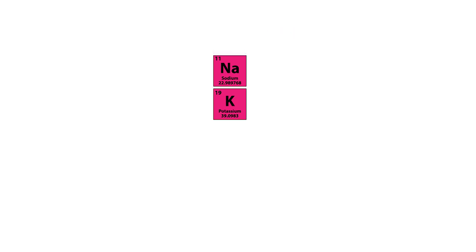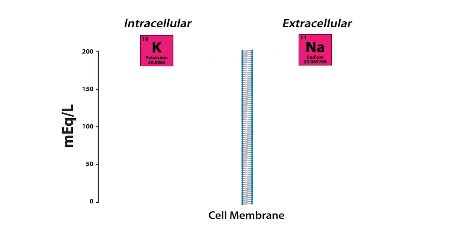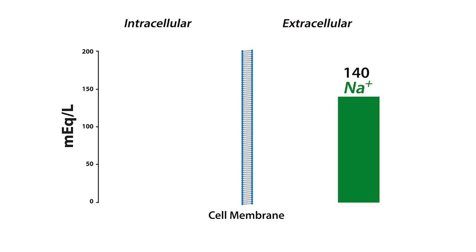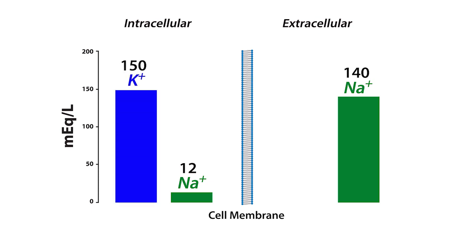On the other hand, sodium and potassium are the two most abundant extracellular and intracellular ions, respectively. For example, the typical extracellular sodium concentration is 140 mEq per liter, while the intracellular sodium concentration is about 12 mEq per liter. On the other hand, intracellular potassium concentration is about 150 mEq per liter, while the extracellular potassium concentration ranges between 3.5 to 5.5 mEq per liter.